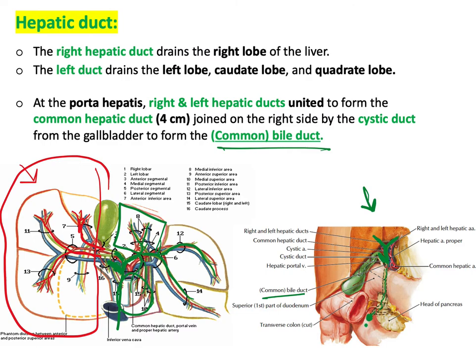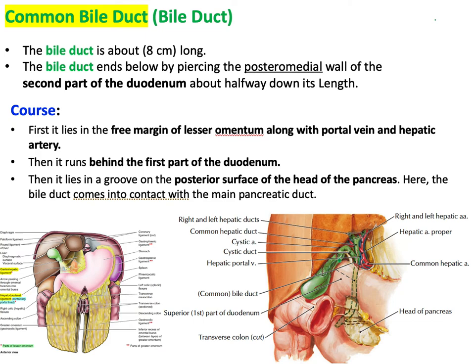The common bile duct results from the union of the common hepatic duct with the cystic duct. It is about eight centimeters long and ends by piercing the posteromedial wall of the second part of the duodenum, approximately halfway down its length.